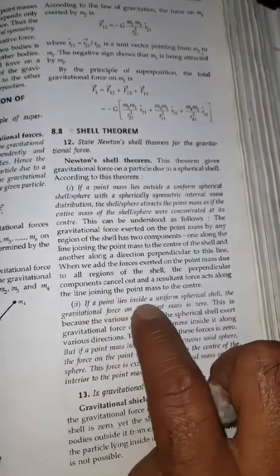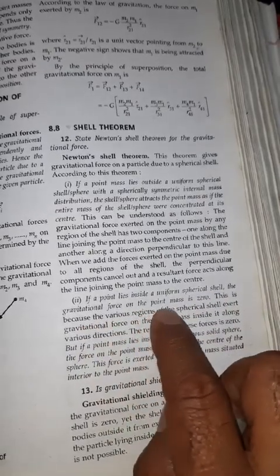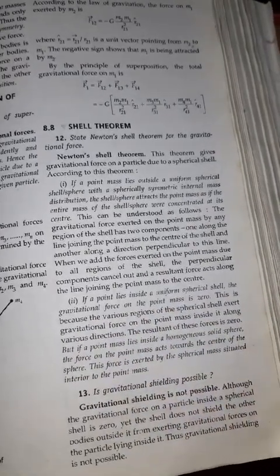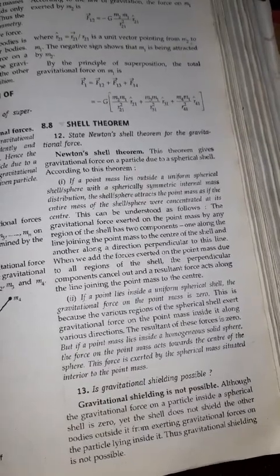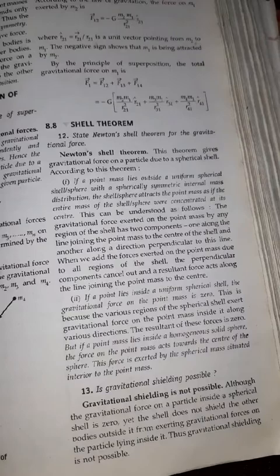is if a point lies inside the uniform spherical shell, the gravitational force on the point mass is zero. So on that point mass there will be no gravitational force. So that's all about the shell theorem.